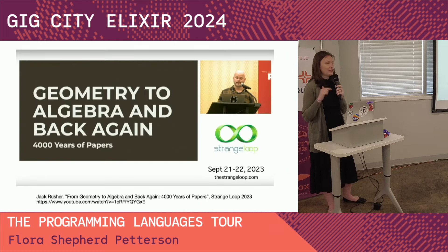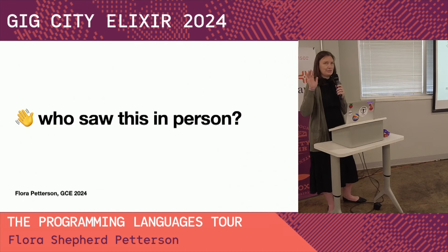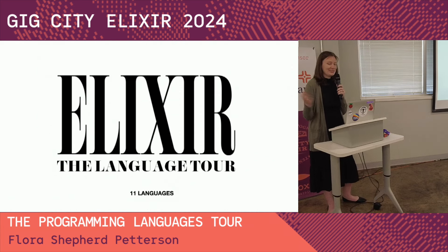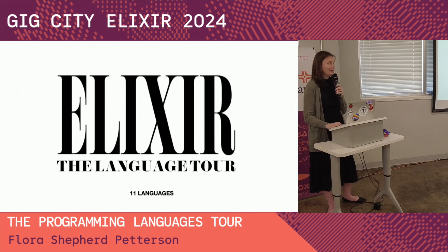This was inspired by a talk I saw at Strange Loop last year. It was a really great history of mathematics, and it reminded me of Taylor Swift in her Eras Tour, where she goes through the history of all the albums leading to the present. I thought that'd be a really fun structural device, a rhetorical device to structure a talk around. So here we are.